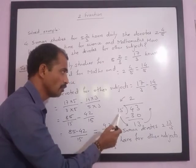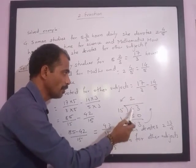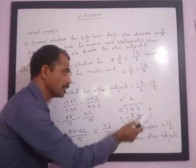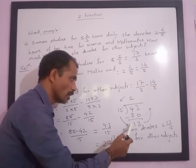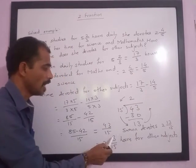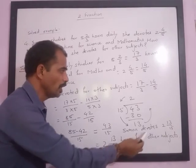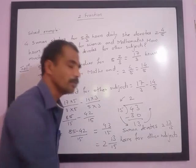15 into 30, 15 times 2 is 30, remainder is 13. While writing in mixed fraction, this number goes upside, this number goes forward, this number goes downside, so it will be 2 13/15. The answer in words: Suman devotes 2 13/15 hours for other subjects.